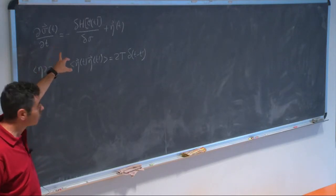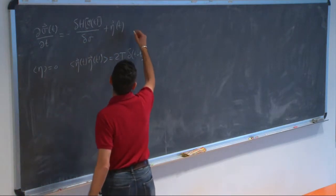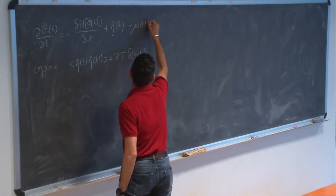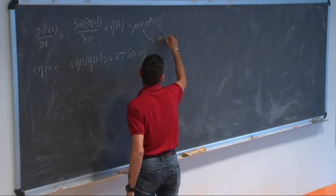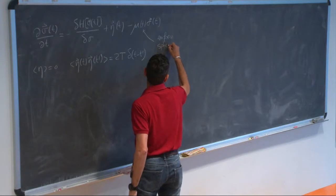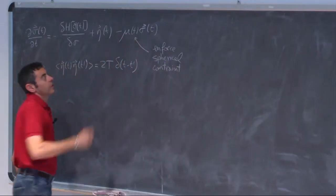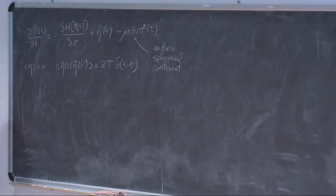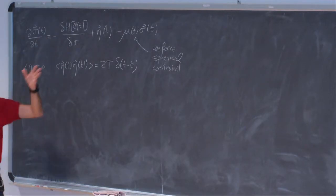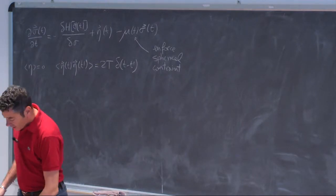Obviously this is not what happens in a real system — in a real system the dynamics is quantum — but we are working in the classical realm. If the spins are Ising spins this is not well-defined, but if the spins are spherical spins, real variables, this differential equation is perfectly well-defined. To enforce the spherical constraint you need to add a term — a Lagrange multiplier mu — either in the Hamiltonian or in the equation. At each time you choose mu such that sigma at time T satisfies the spherical constraint.